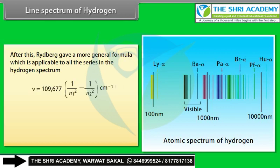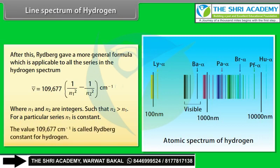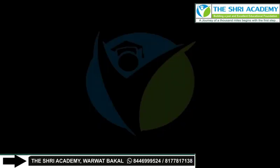The general formula applicable to all series is: ν̄ = 109,677 × (1/n₁² − 1/n₂²) cm⁻¹, where n₁ and n₂ are integers with n₂ > n₁, and n₁ is constant for a particular series. The value 109,677 cm⁻¹ is called the Rydberg constant for hydrogen.